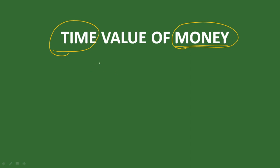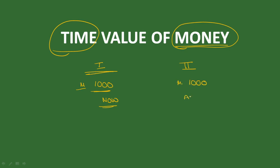So, let's see — you have two options: option 1 and option 2. Suppose in option 1, you receive the amount now, and in option 2, you receive the amount after 1 year. So, you have option 1 and option 2 — which do you prefer? Absolutely the first option.